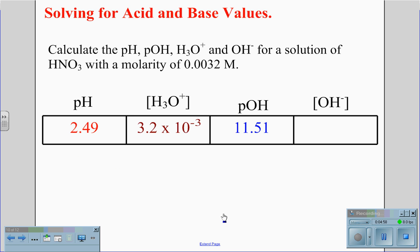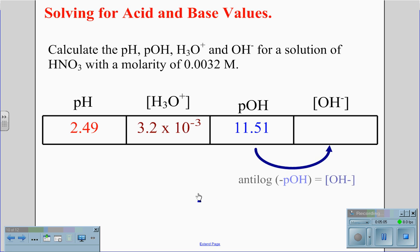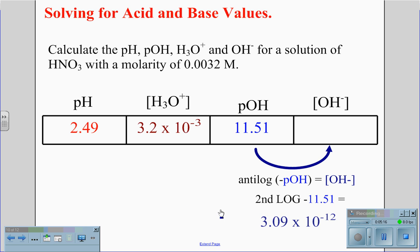We can now convert our pOH value to our hydroxide concentration. We do this using the anti-log of the negative pOH to get the hydroxide concentration. On the calculator: second log of negative 11.51 gives a value of 3.09 times 10 to the negative 12th.